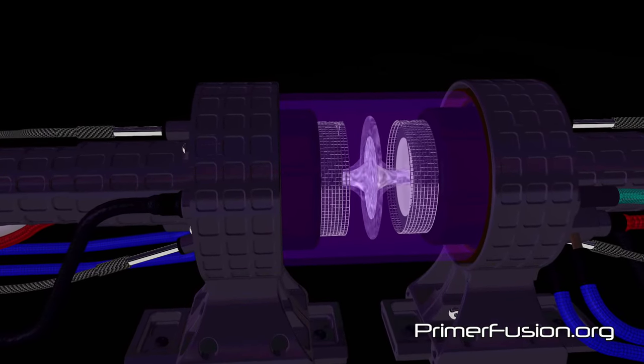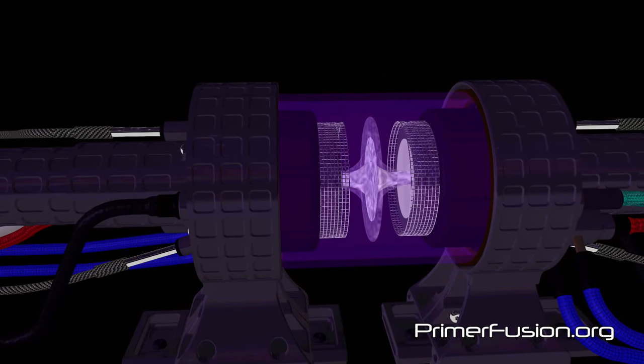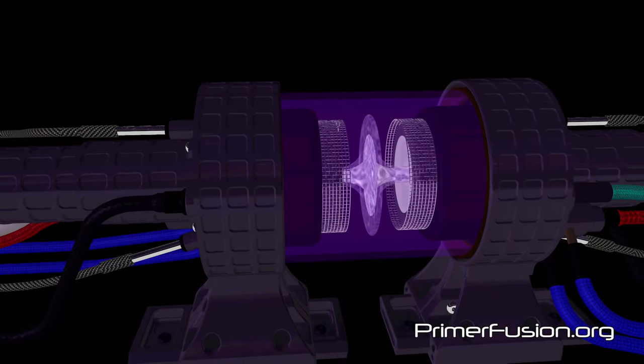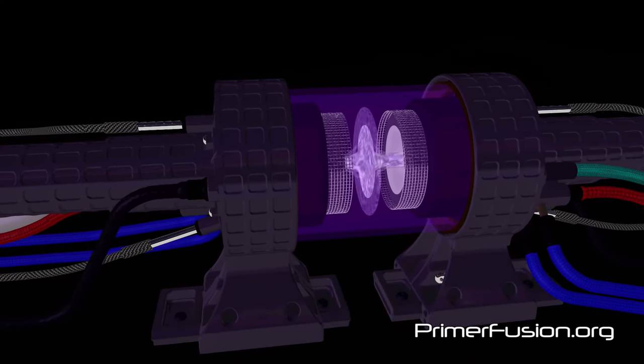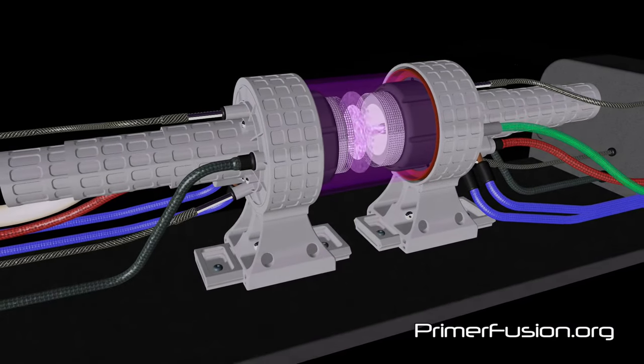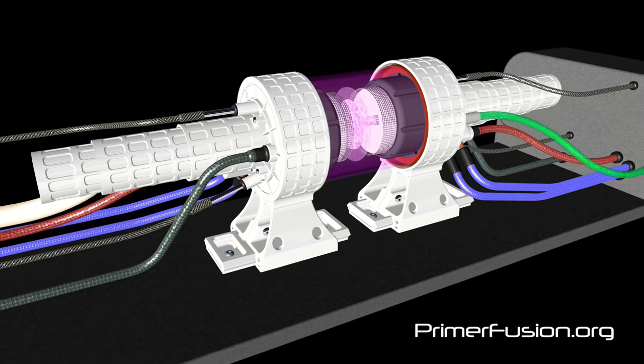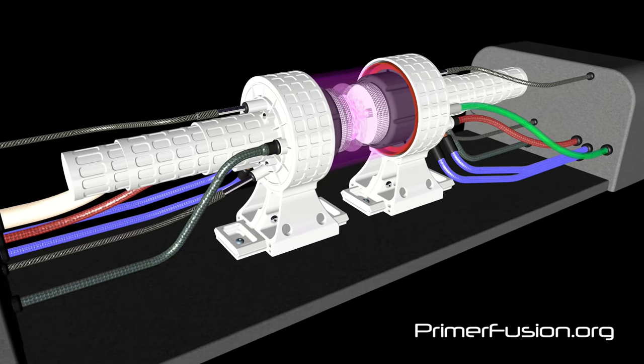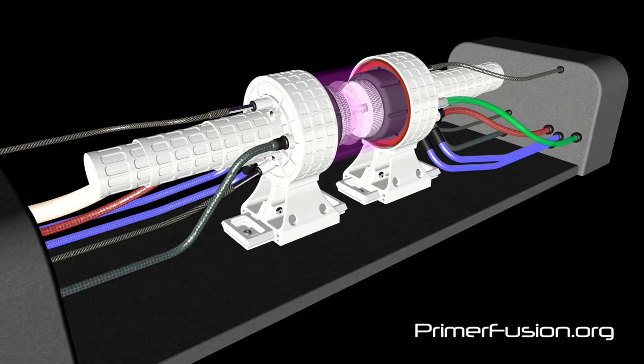This new reactor design will use ceramic components that will allow me to run the Primerfusion reactor at much higher temperatures. This new reactor will also incorporate a new power supply design that will provide 10 times the electrical power to the plasma in the Primerfusion reactor. I have also made several other design changes in these new power supplies that I believe will increase the fusion rates in the reactor.